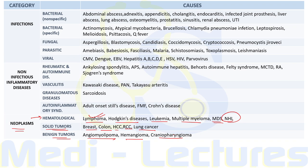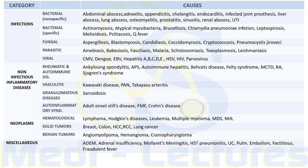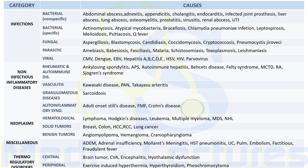Miscellaneous causes include acute demyelinating encephalomyelitis, Mollaret's meningitis (a non-infectious meningitis due to sterile thrombotic disease, a paraneoplastic syndrome commonly seen with adenocarcinomas), hypersensitivity pneumonitis, ulcerative colitis, pulmonary embolism, factitious fever, and fraudulent fever. Thermoregulatory disorders include central disorders like brain tumor, CVA, and encephalitis, and peripheral disorders like exercise-induced hyperthermia, hyperthyroidism, and pheochromocytoma.